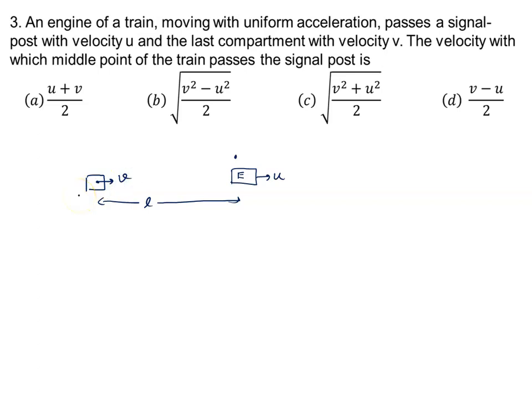It means the train speed is changing, so the train is accelerating. The velocity with which the middle point of the train passes—let's say this is the middle point at distance l/2 from the engine to the last bogey.